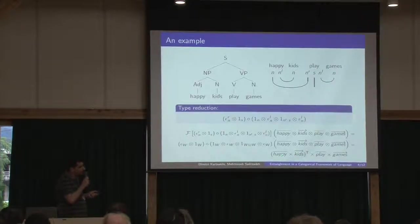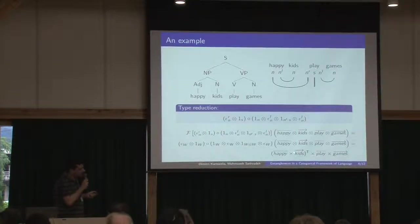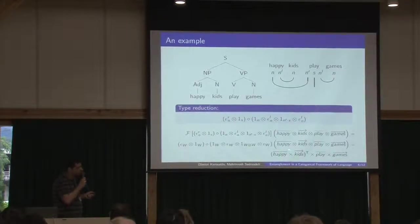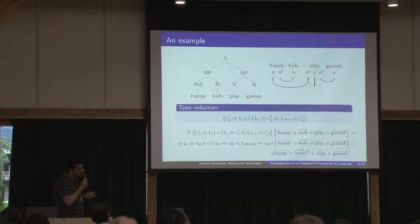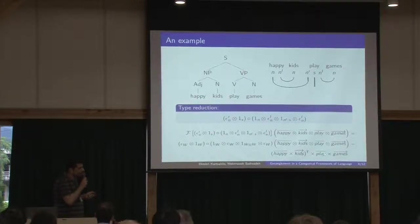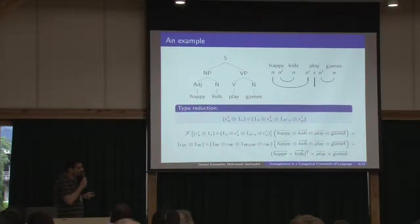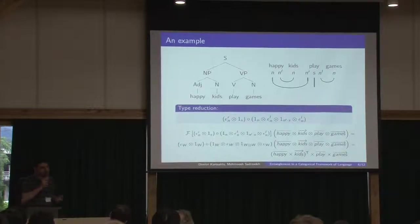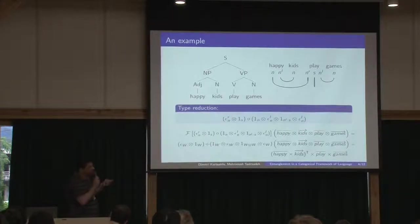If we apply our functor, then at the end we are going to get something like this. Here, for example, happy is an adjective, so it is represented by a matrix, a tensor of order two. Play is a transitive verb, so it's an order three tensor. And the symbol here is tensor contraction. So the result of this calculation will be a vector living in our basic vector space, and this vector will represent the meaning of the sentence.